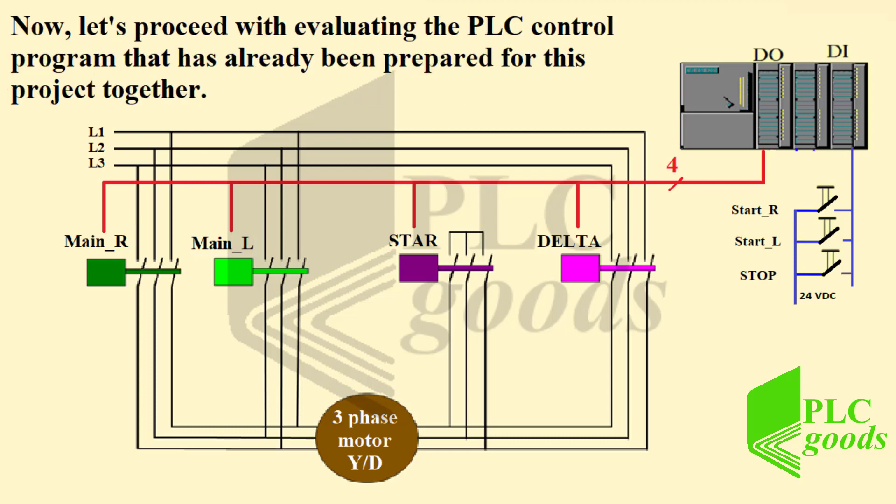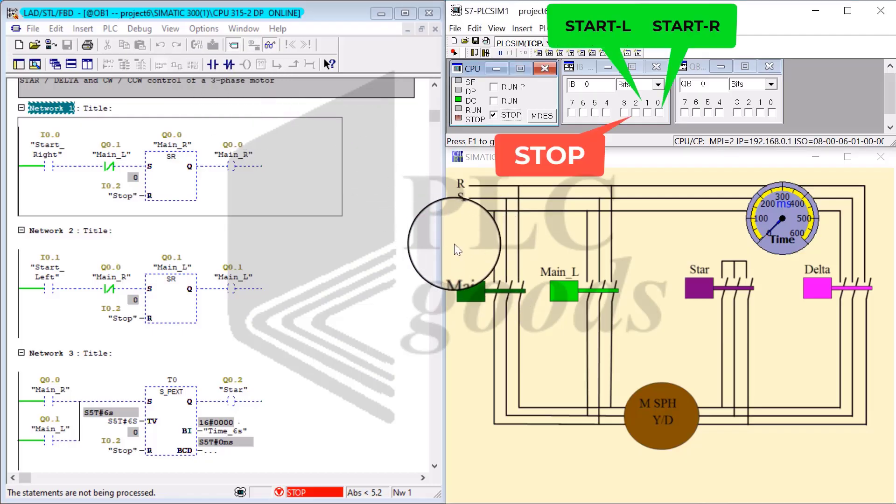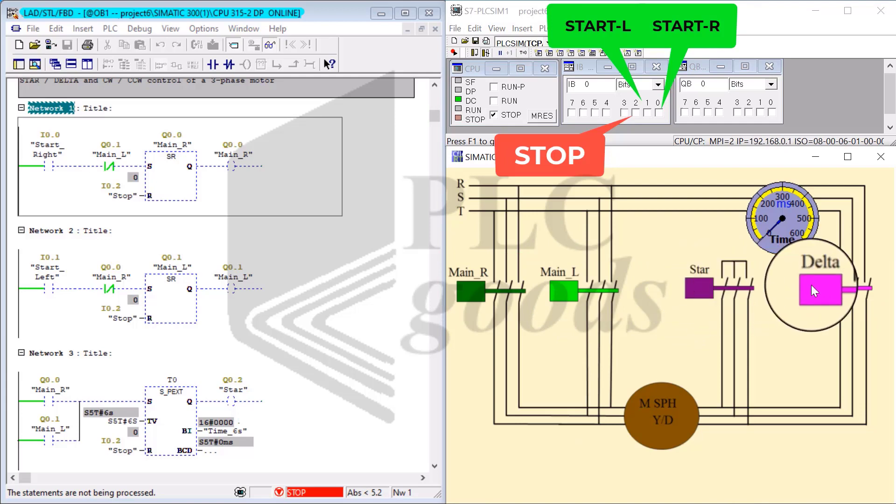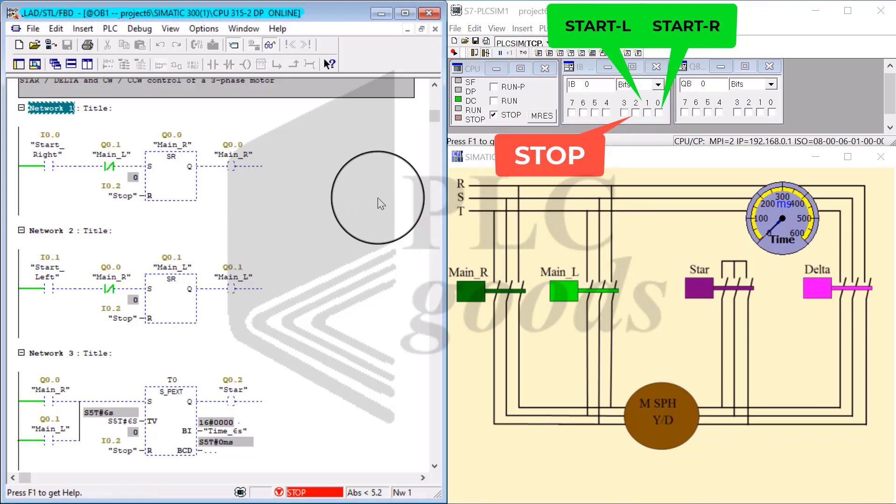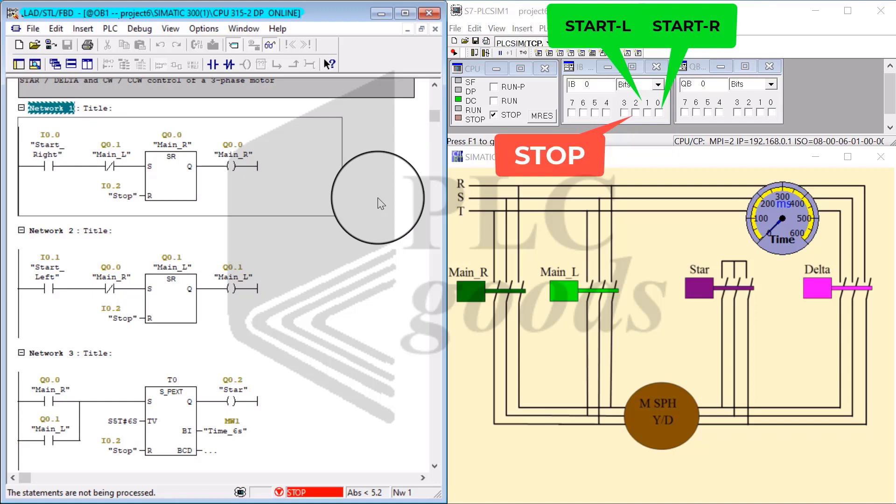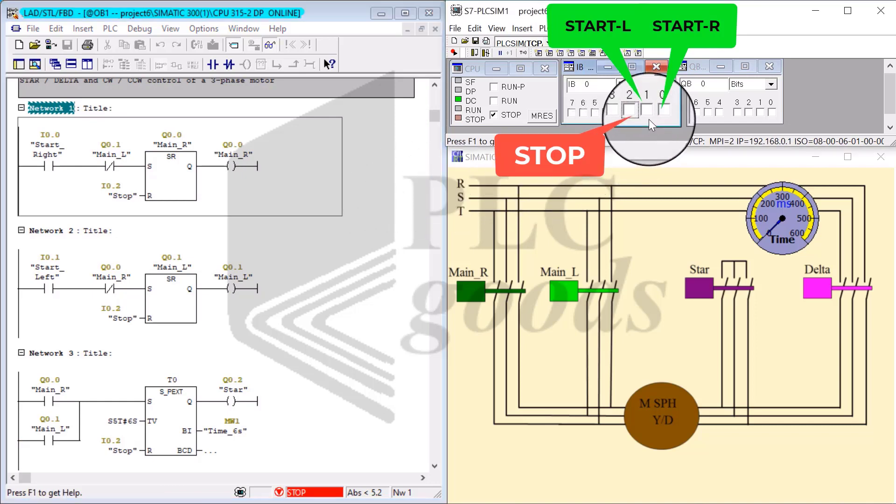Now let's proceed with evaluating the PLC control program that has already been prepared for this project. Together in this program, I have four outputs: main R, main left, star, and delta coils. The control program is consisted of four lines of code and three input push buttons: start right, start left, and finally stop push button.